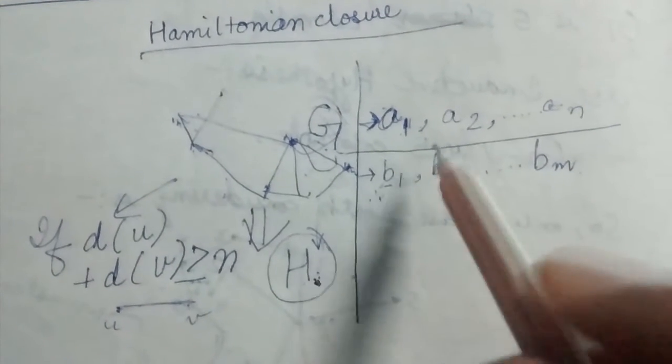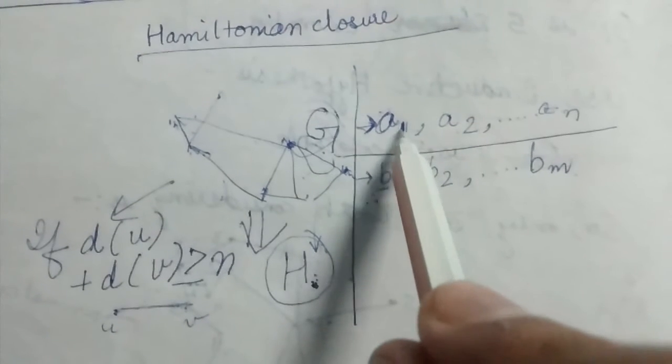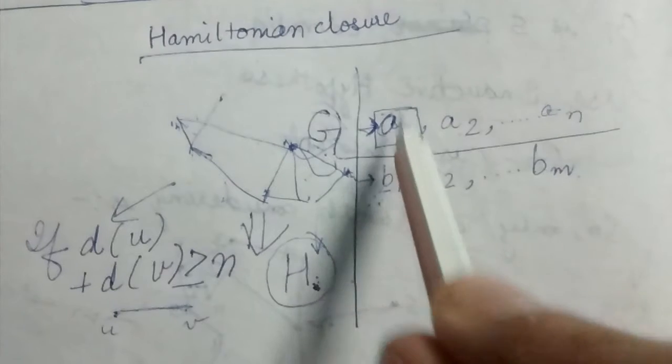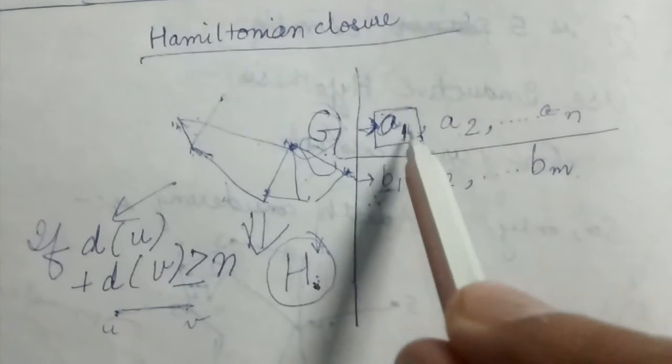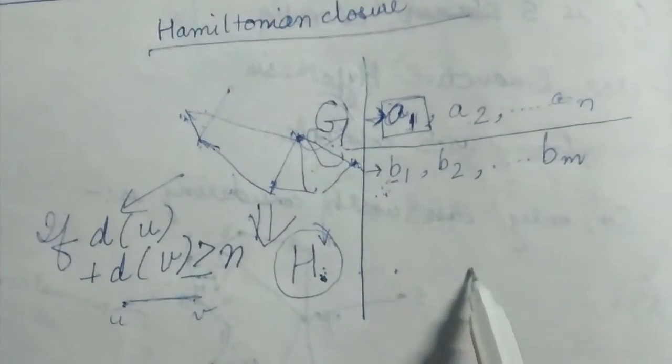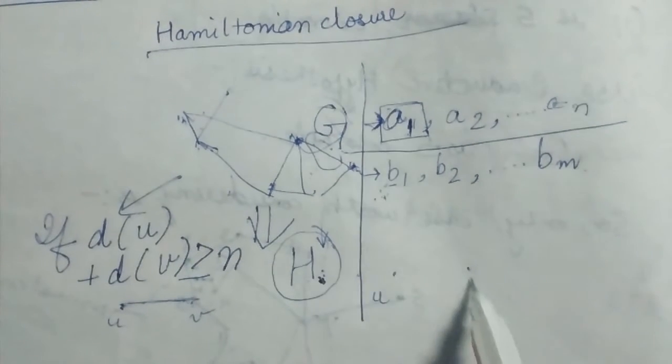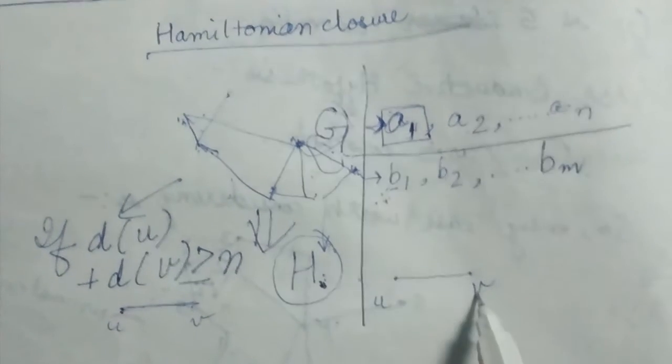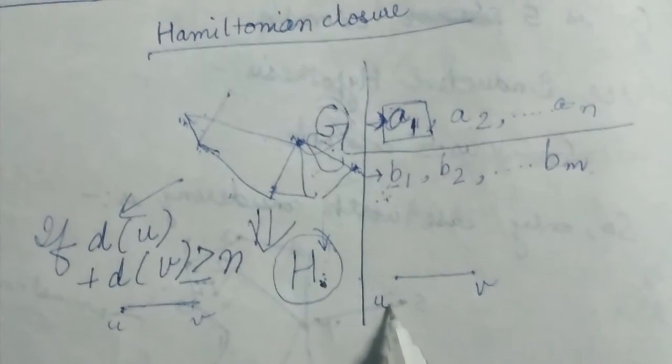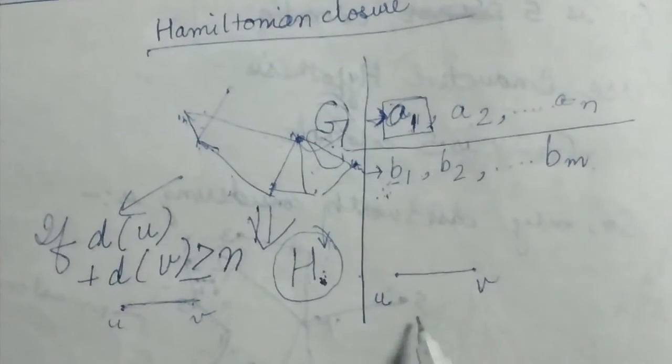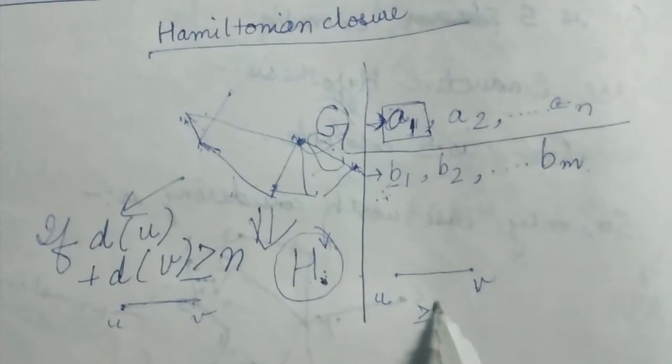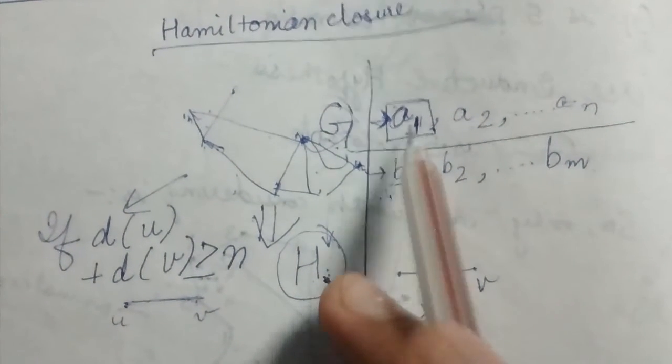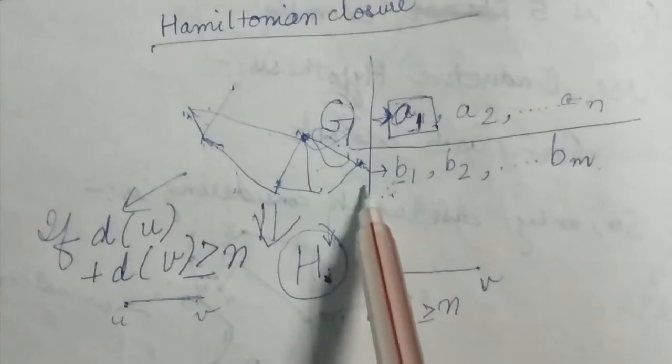So if I am adding the edge a1 to my graph, what does it mean? I am adding the edge a1 between two vertices u and v. It means that the sum of degree of u and v is greater than or equal to n. That's why I am adding a1.